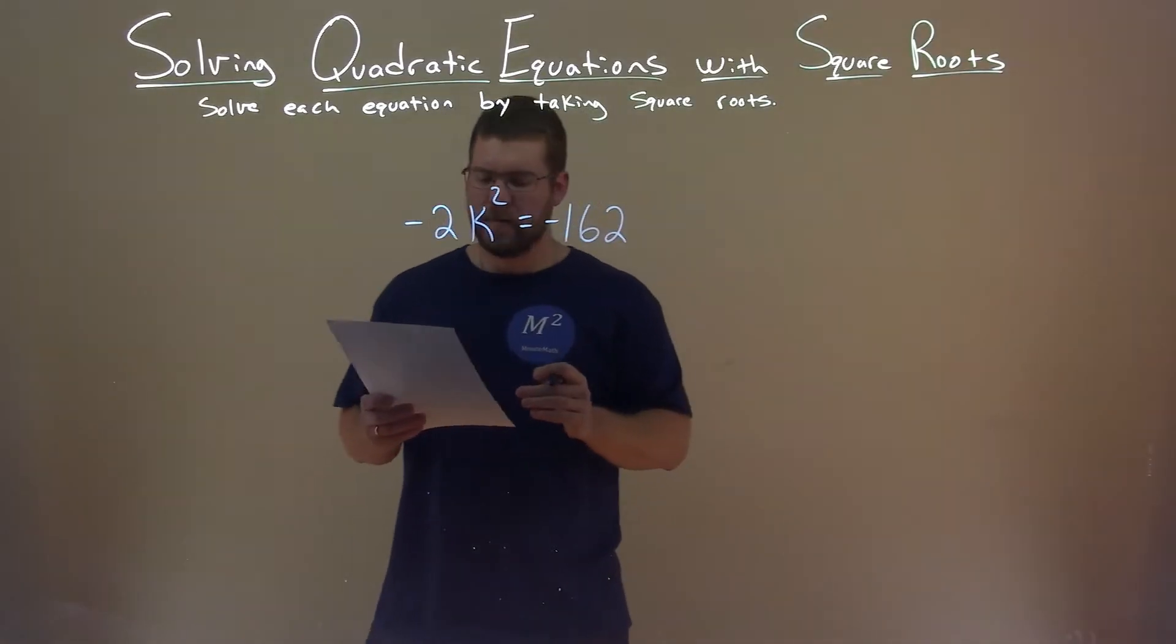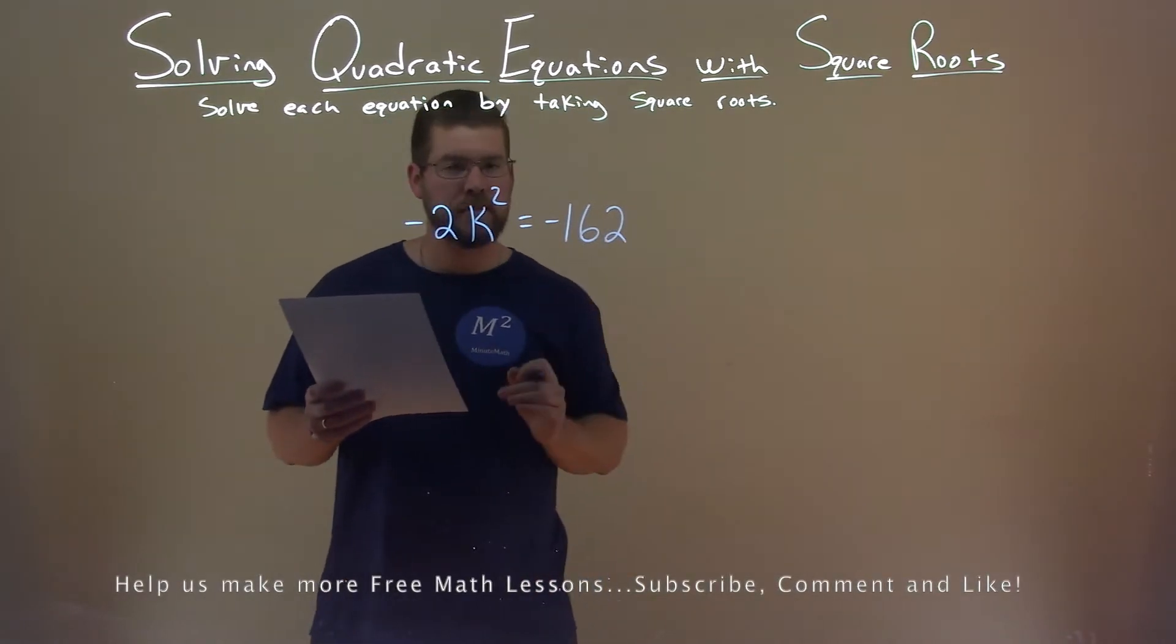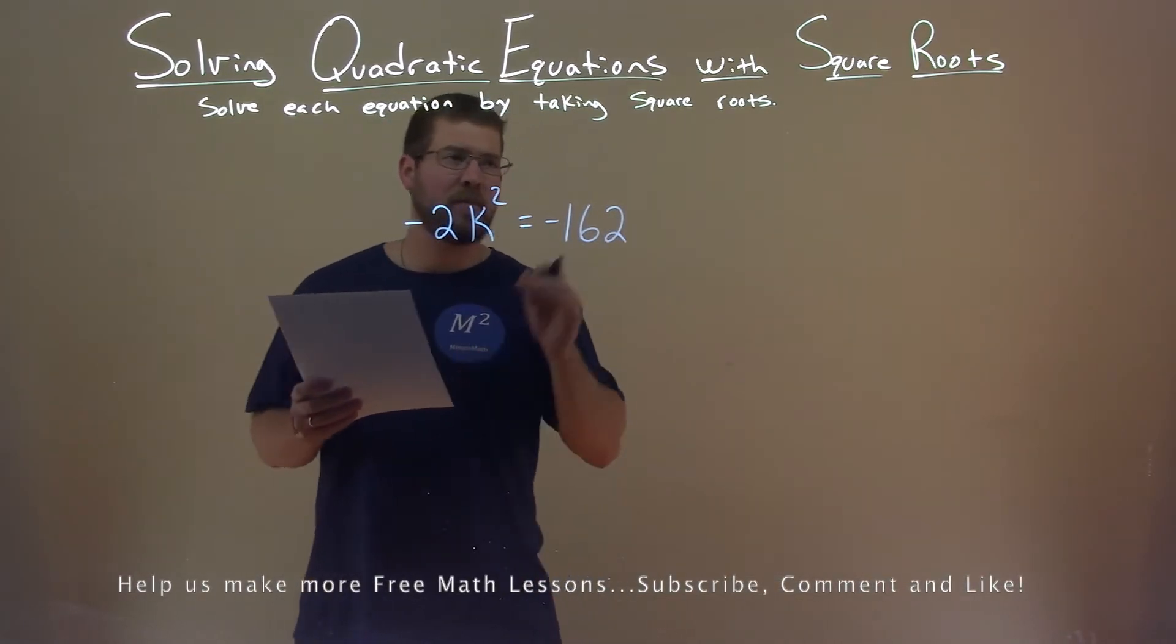We're given this problem right here: negative 2k squared equals negative 162, and we want to solve this equation by taking square roots.